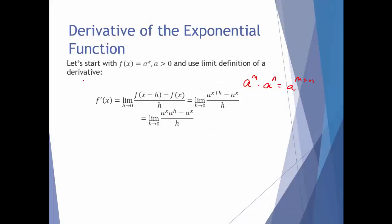Everything else stays the same — we still have a limit, a to the x, and h. The reason I'm interested in doing that is that these two terms in the numerator now both contain an a to the x, which we can factor out. That leaves us in the numerator with a to the h minus 1.